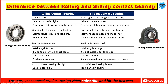The rolling contact bearing has a complicated design to maintain the balls, but the sliding contact bearing has a simple design and is less costly to manufacture. The rolling contact bearing produces more noise, whereas the sliding contact bearing produces less noise and vibration — it works more smoothly.